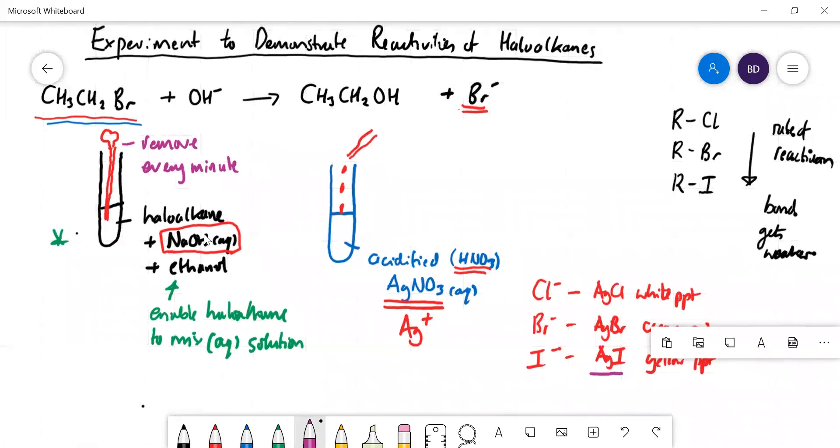So you're going to release iodide ions which then react with the silver ions. That is just a fairly rough and ready experiment to prove the order of reactivity. You should get the precipitate forming first with the iodide, a little bit more slowly with the bromide, and the chloride slowest of all.